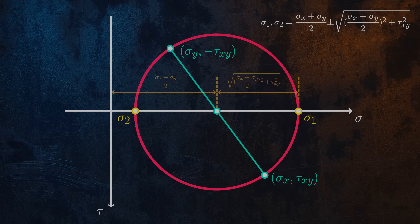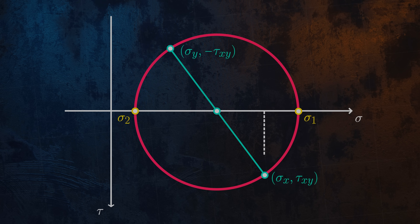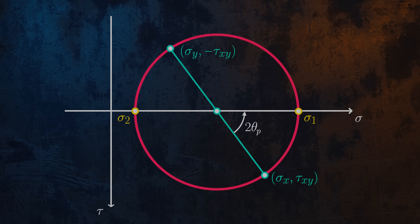We can also use trigonometry to calculate angles on Mohr's circle. For example, we can calculate the angle theta p between our original stress element and the principal planes. An important thing to note is that angles in Mohr's circle are doubled compared to the angle we rotate our stress element by. This is apparent by observing that in Mohr's circle there is a 180-degree angle between the minimum and maximum principal stresses, whereas on our stress element the angle is 90 degrees. This is why we use the 2 times theta notation on Mohr's circle — theta is the angle we rotate our stress element by, and 2 times theta is the corresponding angle on Mohr's circle.